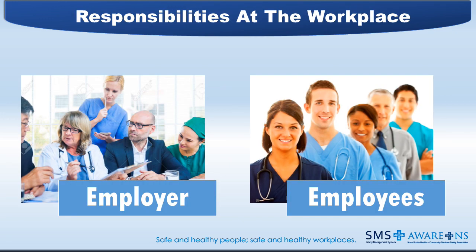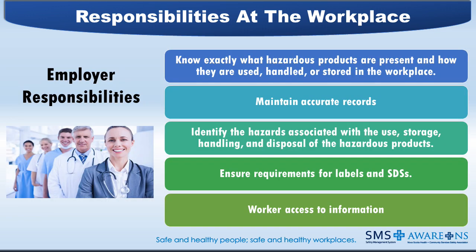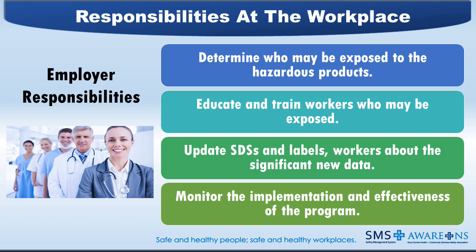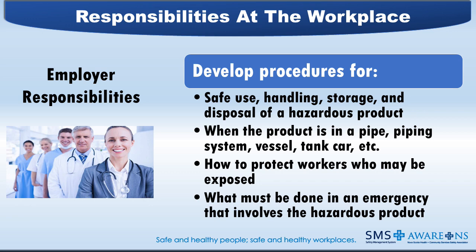Employer Responsibilities: employers need to know exactly what hazardous products are present and how they are used, handled, or stored in the workplace. There should be a way to maintain records on things like the location and amount. The organization also needs to ensure requirements for labels and Safety Data Sheets are met and that workers have access to them. Understanding who may be exposed to the hazardous products will help to determine which staff needs education and training. Employers must ensure that up-to-date Safety Data Sheets and labels are present so that workers can be informed about significant new data. Employers also need to develop procedures for safe use, handling, storage, and disposal of a hazardous product, understanding the impact when the product is in a piping system, vessel, or tank, how to protect workers who may be exposed, and what must be done in an emergency involving the hazardous product.